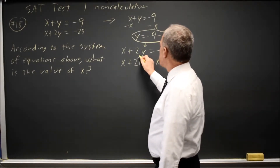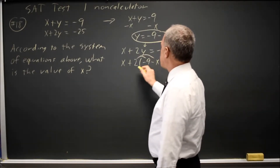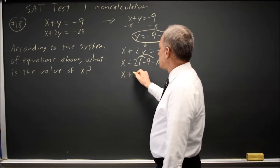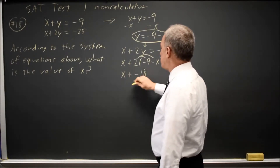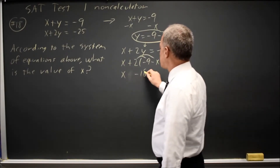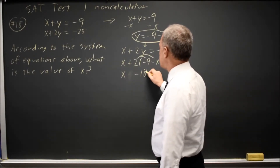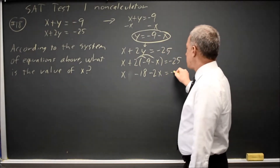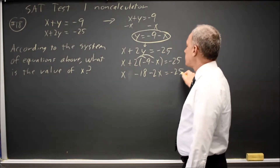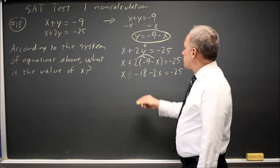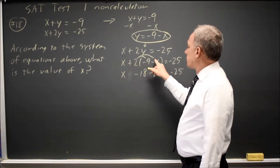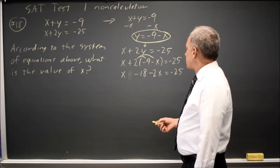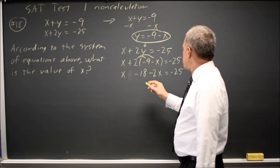Distributing the 2 to both the negative 9 and the negative x, I get x plus negative 18 — which I'm going to call x minus 18 — minus 2x equals negative 25. The biggest mistake is failing to distribute the 2 or dropping a negative there.